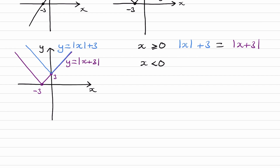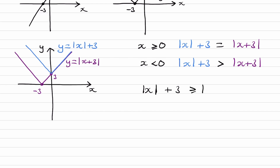The y-coordinates represent y equals modulus of x plus 3 and y equals modulus of (x plus 3) respectively. So if purple y is less than blue y for all negative x values, then modulus of x plus 3 is less than modulus of (x plus 3) when x is less than 0. Therefore, the statement that modulus of (x plus 3) is greater than or equal to modulus of x plus 3 is true: for positive x and x equals 0 the two are equal, and for negative x, blue is bigger than purple.